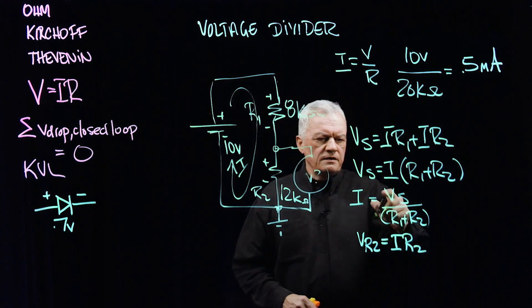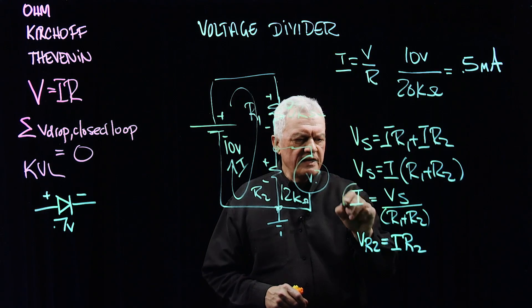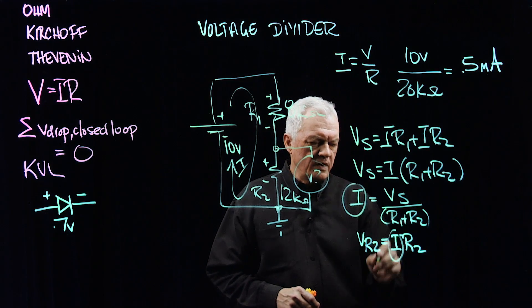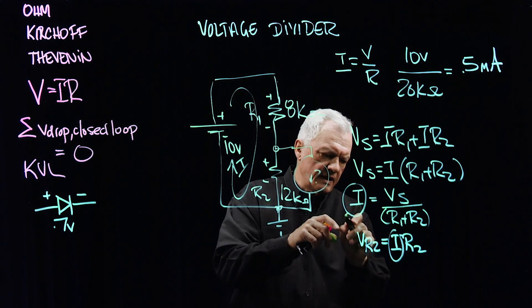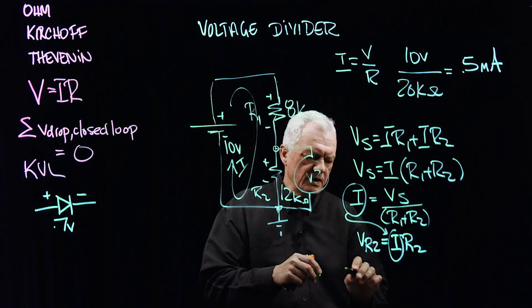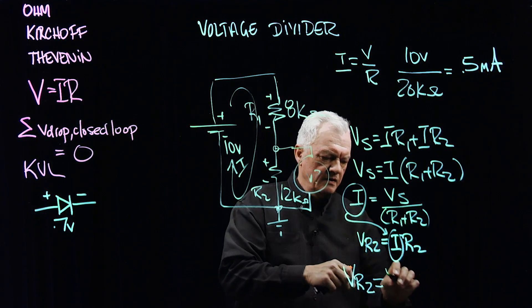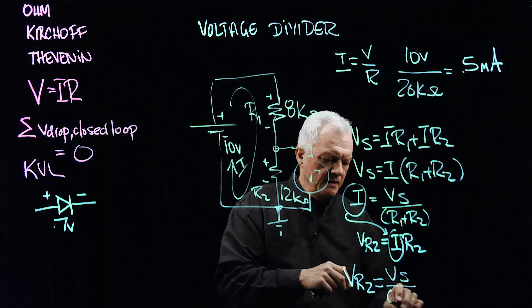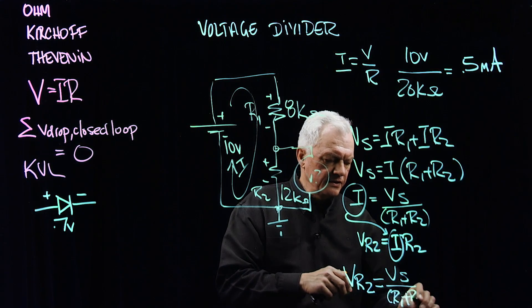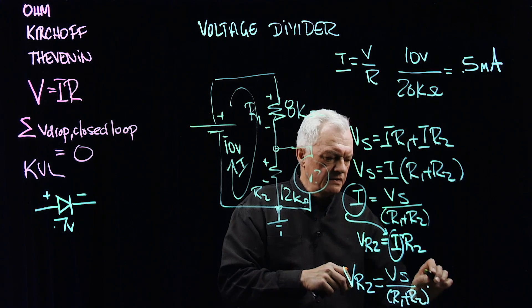We have this equation, we have I here and we have I here. Why don't I substitute this I for this I. What I've got is VR2 equals VS over R1 plus R2 times R2.